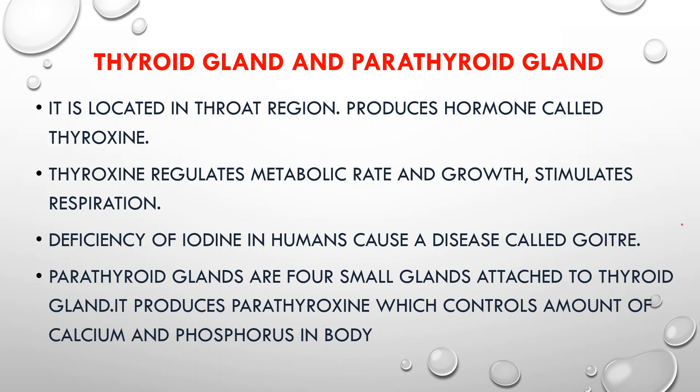Now let's discuss the thyroid gland and parathyroid glands. The thyroid gland produces the hormone known as thyroxine. The thyroid gland is located in the throat region. Thyroxine regulates the body's metabolic rate, growth, and respiration.